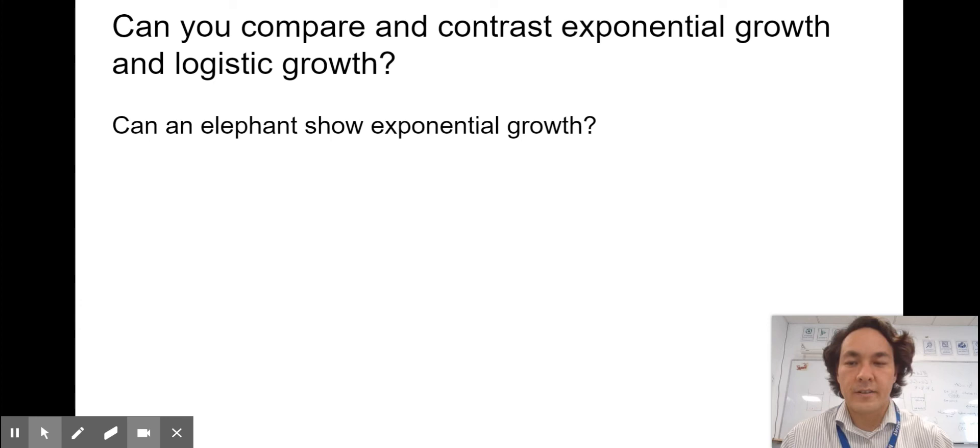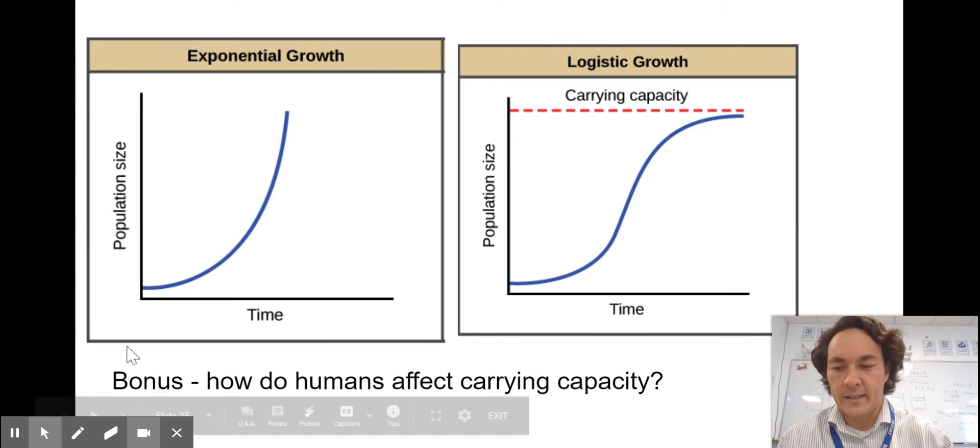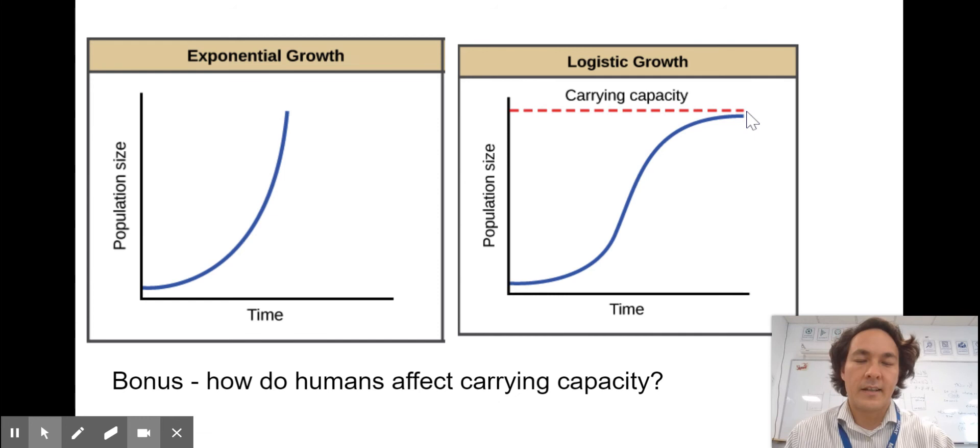Can you compare and contrast exponential and logistic growth? Exponential growth is a J-shaped curve. Whereas logistic growth is an S-shaped curve and it's going to level off at some area of carrying capacity. Everything can grow exponentially, but everything is eventually constrained by resources and to pause at some carrying capacity.